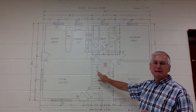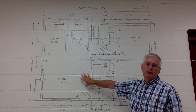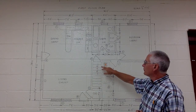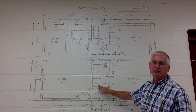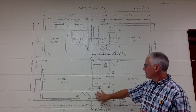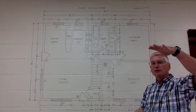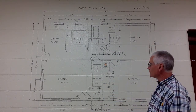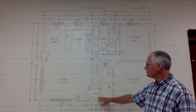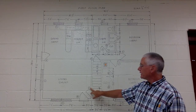This right here says DN 13 R — that means from this floor, the first floor, there are 13 steps going down to the basement: 13 risers, or 13 steps. A closet as you go down into the basement — that closet stays on the first floor, so you go underneath this particular closet.